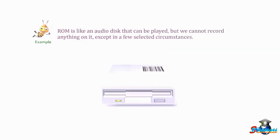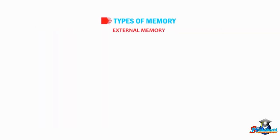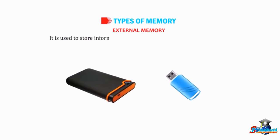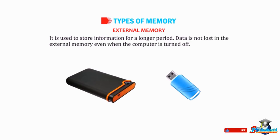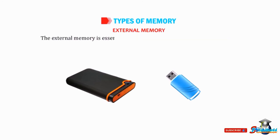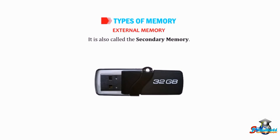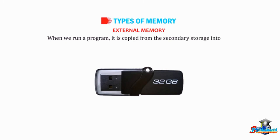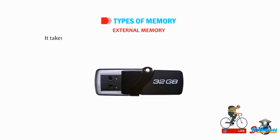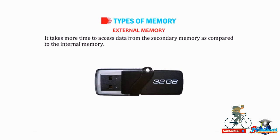Now let's talk about the external memory. It is used to store information for a longer period. Data is not lost in the external memory even when the computer is turned off. The external memory is essential because the internal memory of a computer has a limited storage capacity. It is also called secondary memory. When we run a program, it is copied from the secondary storage into the internal memory. It takes more time to access data from the secondary memory compared to the internal memory.